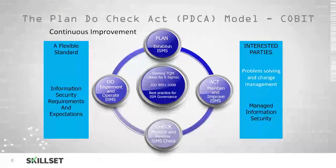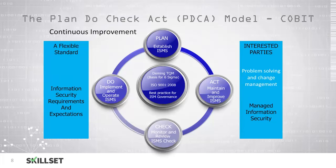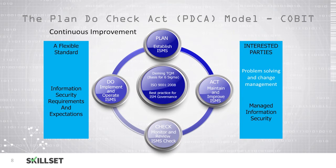The Plan, Do, Check, Act model is part of the COBIT framework, and it's designed to provide continuous improvement to your processes. During the planning phase, you will establish your information security management systems. You will then move on to the second phase, where you actually implement the system. During the Check phase, you will monitor the system to make sure that it is meeting your expectations and functioning properly. And during the Act phase, you will maintain your information security management system and implement any necessary improvements to ensure that your organization is safe from security risks.